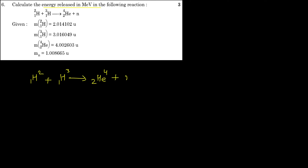Plus one neutron is formed. So how will you find the energy released in this reaction? To get the energy released, you need to find the mass defect. Mass defect is the amount of mass which gets converted into energy. This question is based on Einstein's very famous mass-energy equivalence relation — E = mc².